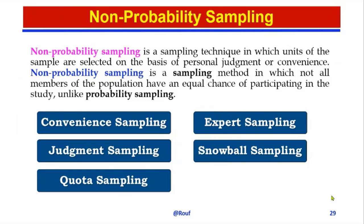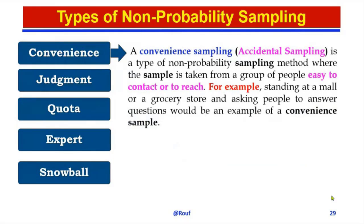The first type is convenience sampling. Convenience sampling, also called accidental sampling, is a type of non-probability sampling method where the sample is taken from a group of people easy to contact or to reach. For example, standing at a mall or a grocery store and asking people to answer questions would be an example of a convenient sample.